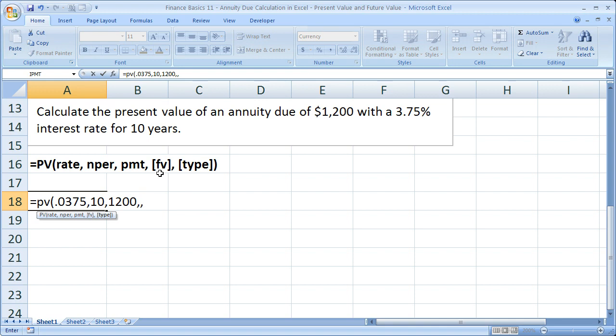And then for type, just like we did for the future value, you want to put a one right here. If you leave it blank or you enter zero, by default it's going to automatically assume that the payments come at the end of the period.